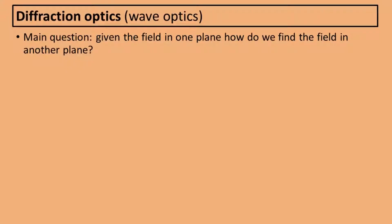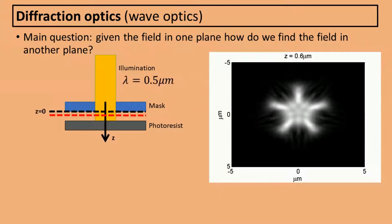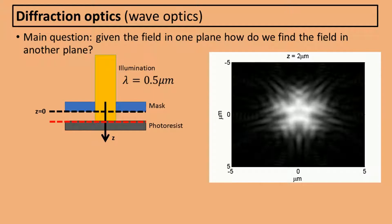The main question we'll be discussing is the following: if we know the field in one plane, how will the field propagate to another plane? This may for example be useful in photolithography. If we want to print the pattern from a mask onto a photoresist, then the pattern we see on the resist is not exactly the same as the pattern we see on the mask, because the field is changing as it propagates.